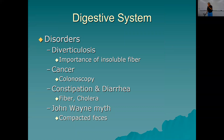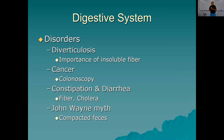Some disorders: diverticulosis is outpocketing of small parts of the large intestine wall where feces can get trapped and become inflamed. Fiber helps prevent that by moving things along. We'll talk more about fiber in the next chapter — insoluble carbohydrate is very healthy: you don't get a nutritional benefit, but it helps move things along and prevents diverticulosis and colon cancer. That's why colonoscopies are a good idea — colon cancer is one of the major cancers that kills people, and you need to be scoped to look for polyps, particularly as you get older.